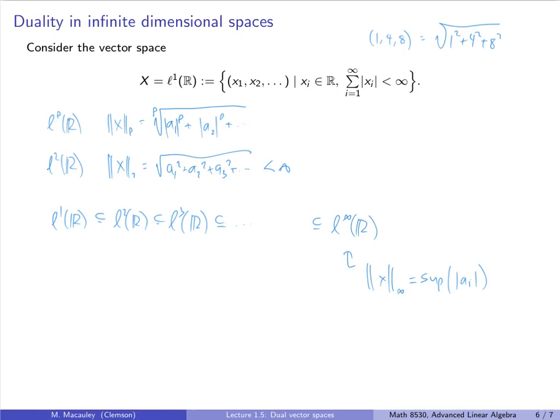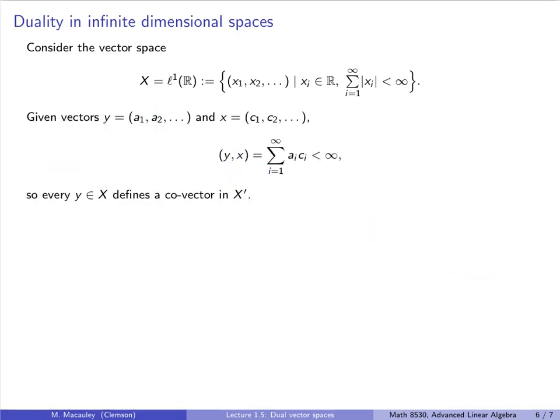Okay, so now we've defined that and given some context as to where these things come from. Let's look at what's weird in these spaces. So let's take two vectors, Y and X. So we can define the scalar product as before, just to be the so-called infinite dot product. And if these things are in our vector space, it's not hard to show that this scalar product is finite.